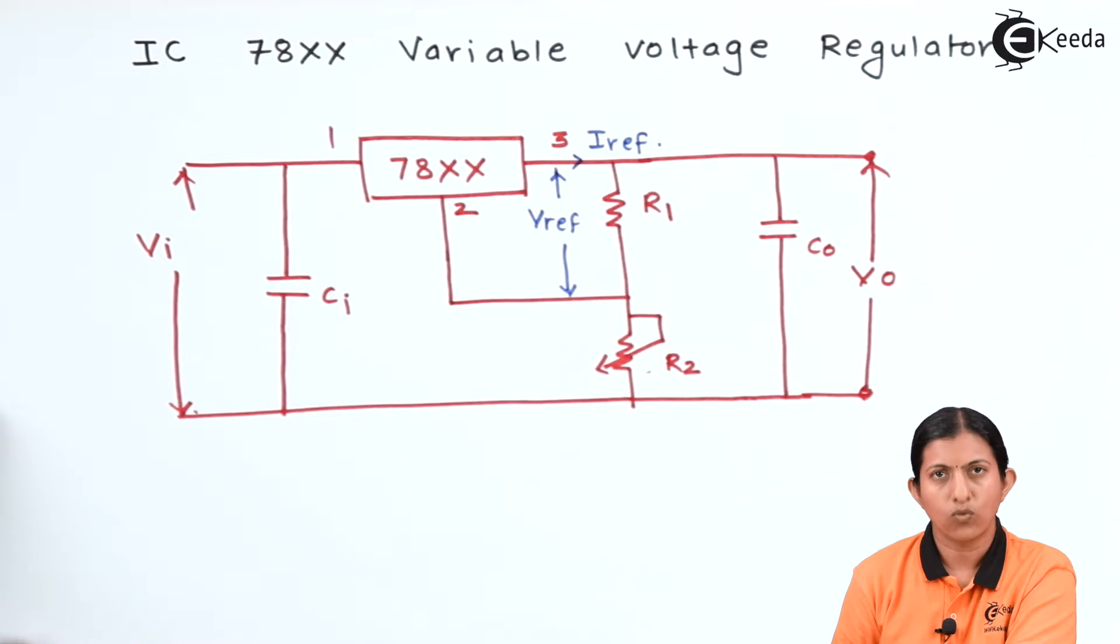The reference voltage is the voltage between pin number 2 and 3 and it is based on which part number is used. For example, when it is 7805, the value of V reference is 5 volt.